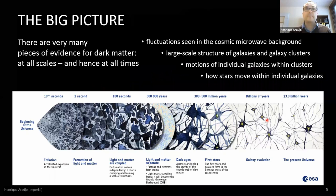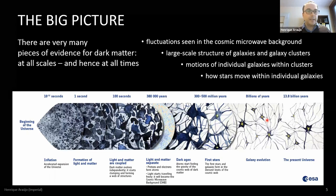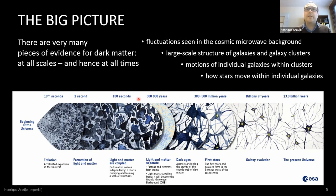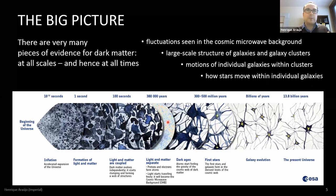The evidence for dark matter doesn't only come from galaxy rotations — in fact there are two dozen pieces of evidence, coming from different scales. For example, we can observe the cosmic microwave background radiation, which is essentially a snapshot from when the universe was about 380,000 years old — a soup of protons, electrons, and photons when the universe formed its first atoms and became transparent.